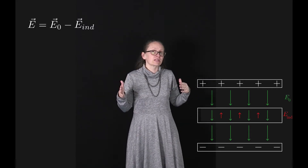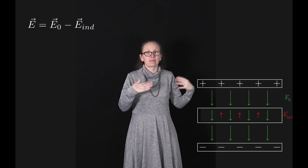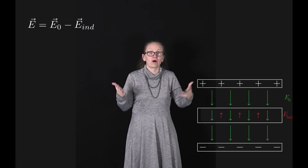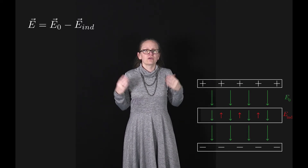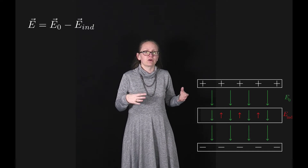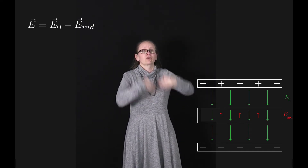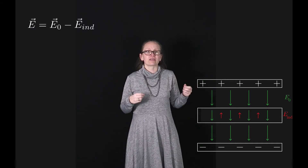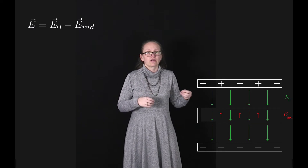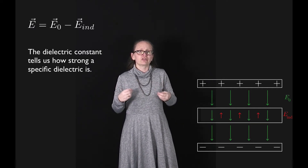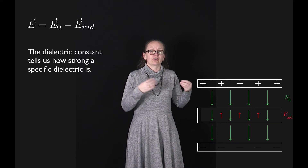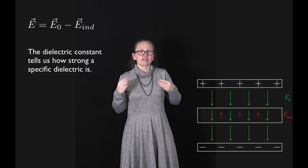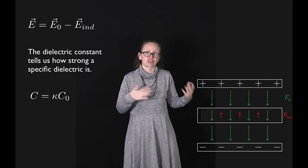Remember that the induced electric field is proportional to the applied electric field E₀, which is creating the polarisation. This effect is not going to be as extreme as it was for the metal, where the induced electric field completely cancelled out the electric field, but it is going to have an effect on the capacitance. To describe dielectrics, we usually use something called a dielectric constant, which tells us how strong that dielectric is.